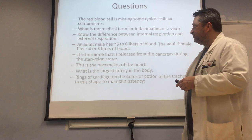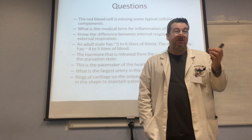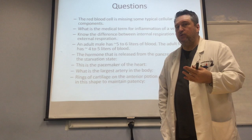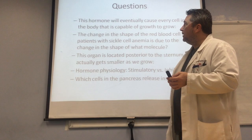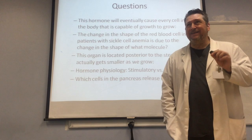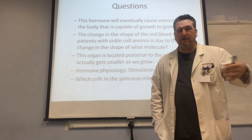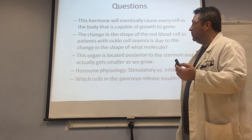The cartilage that we find in the trachea to maintain patency has a specific shape to it. Remember, it needs to give some strength but allow for the esophagus when we swallow something — it has to have that give in the posterior aspect of the trachea, so the cartilage is in that C shape. This hormone will eventually cause every cell in the body that is capable of growing to grow. It acts in the liver first, but eventually every cell with that ability will grow because of this specific hormone released from the anterior pituitary gland.